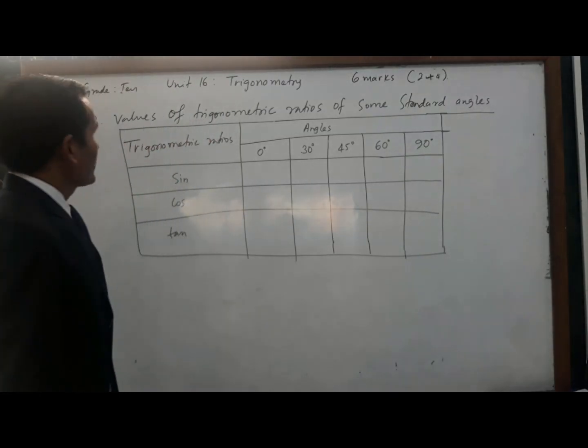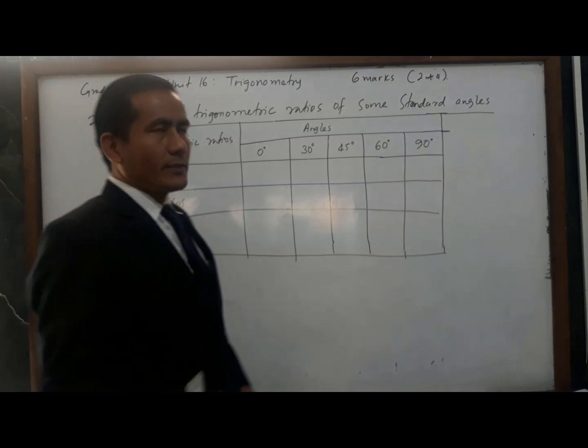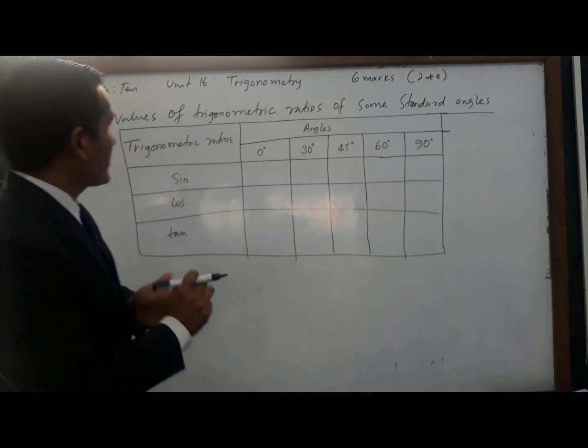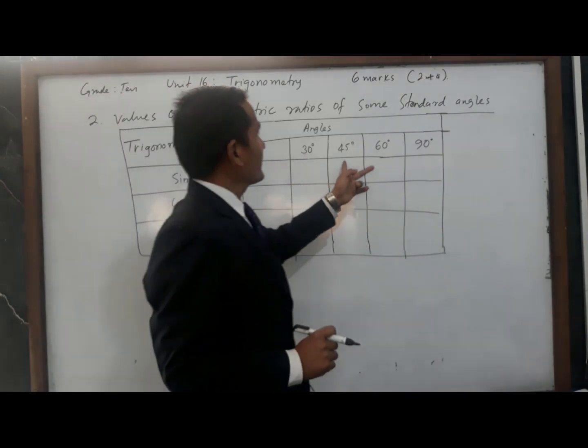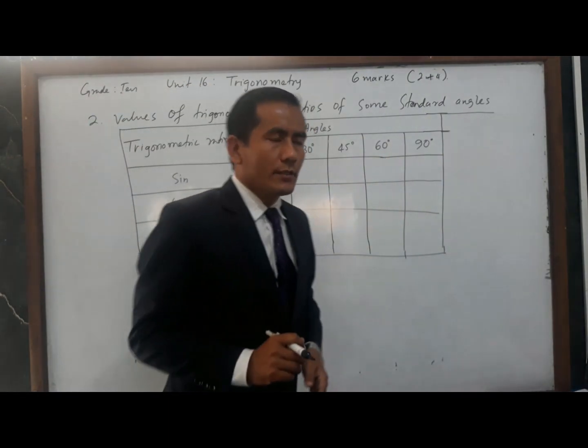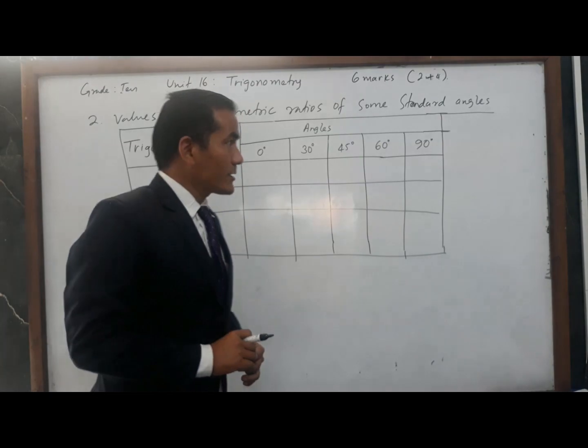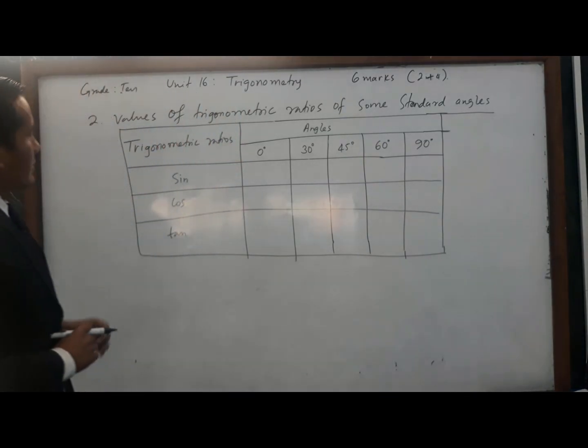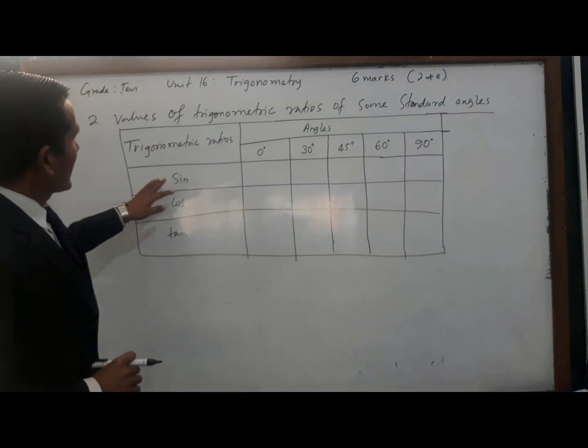Now I am going to tell you the values of trigonometric ratios of some standard angles. Standard angles means 0 degree, 30 degree, 45 degree, 60 degree, and 90 degree. First trigonometric ratio is sine.